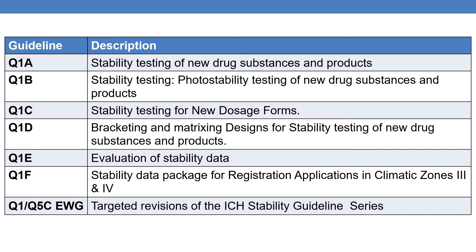Q1E deals with evaluation of stability data — remember, evaluation. Q1F deals with stability data package for registration applications in climatic zones 3 and 4. In addition to that, Q1C EWG, which stands for Expert Working Group, has been established for targeted revisions of the ICH stability guideline series.